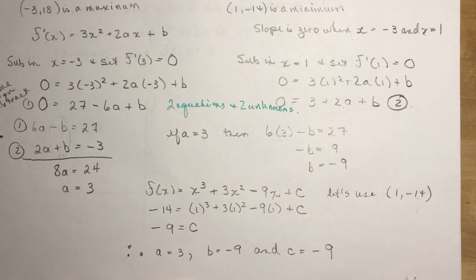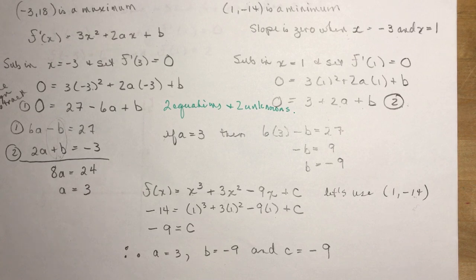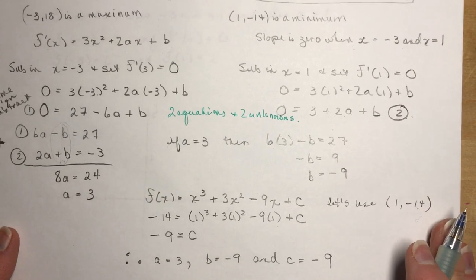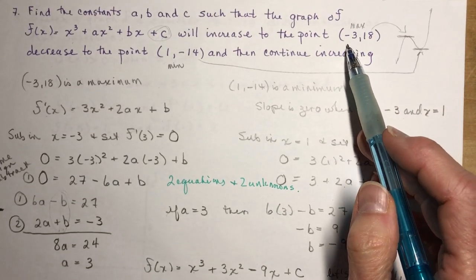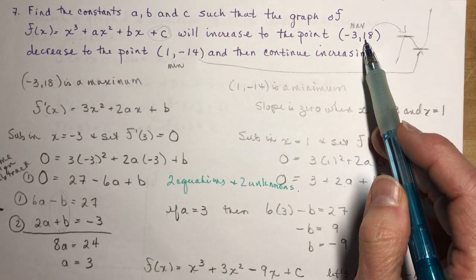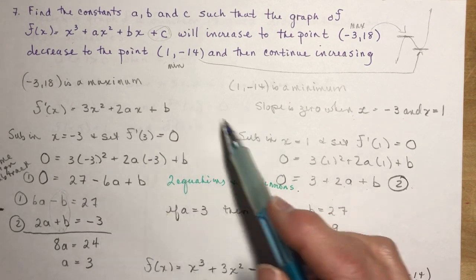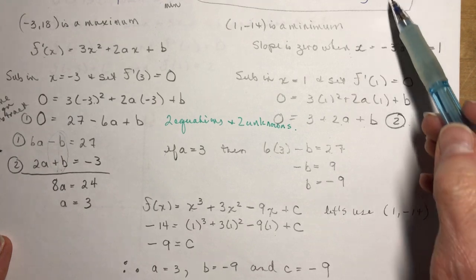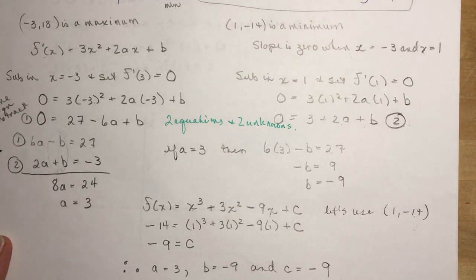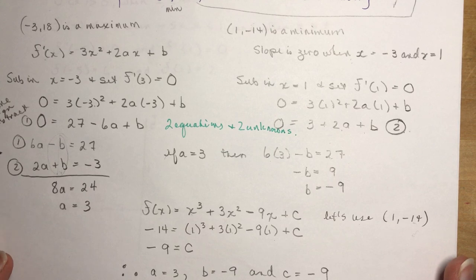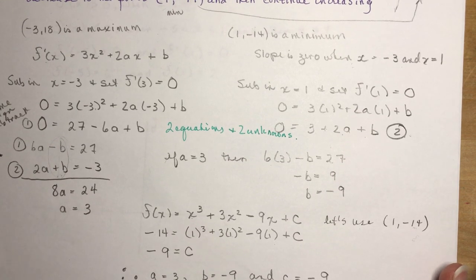So that's a pretty difficult question if you didn't know how to start it. But once you've seen one of these, you know, if it increases, I know this is where the slope is 0. So I set it to 0 and I solve for a and b, use elimination, and then substitute a point into the original function to find c at the end. If you haven't tried this on your own, I would suggest that you do this question on your own and come back and check it again.